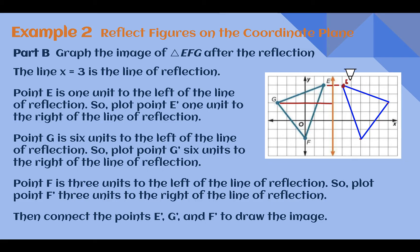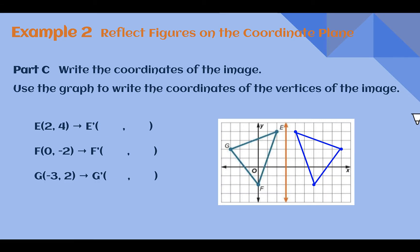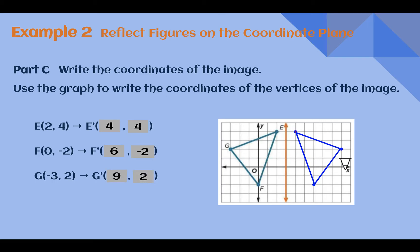So here we would have E prime, down here we would have F prime, and here we would have G prime. Once we have our image we can write our coordinates. E was at (2, 4), so E prime is now at (4, 4). F was at (0, -2), so now it is at (6, -2). And for G we are now at (9, 2). Be careful when figuring out the coordinates — the origin (0, 0) is over here. Please make sure you are counting from that point, not from your line of reflection. That is not (0, 0) — that is actually (3, 0). So please just be careful.